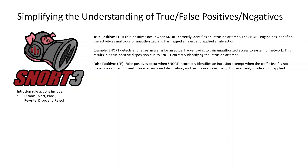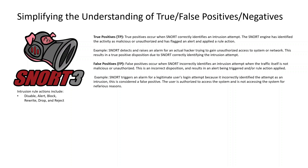False positives occur when Snort incorrectly identifies an intrusion attempt when the traffic itself is not malicious or unauthorized. An example is Snort triggering an alarm for a legitimate user's login attempt because it incorrectly identified it as an intrusion. The user is authorized to access the system and is not doing so for nefarious reasons — this is an incorrect result.